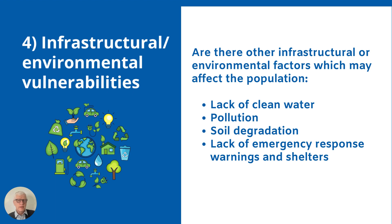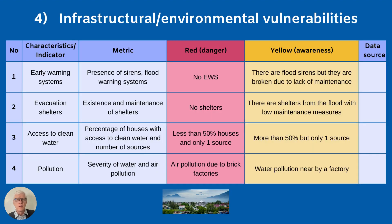Infrastructural and environmental vulnerabilities consider whether other factors might affect the population in a hazard event, such as lack of clean water, pollution, soil degradation that could be worsened by flooding or massive winds, and at an infrastructural level, whether emergency response warnings or shelters are available. For example, having no emergency warning systems would be a red zone, while having flood sirens that are partially broken and need maintenance would be yellow.